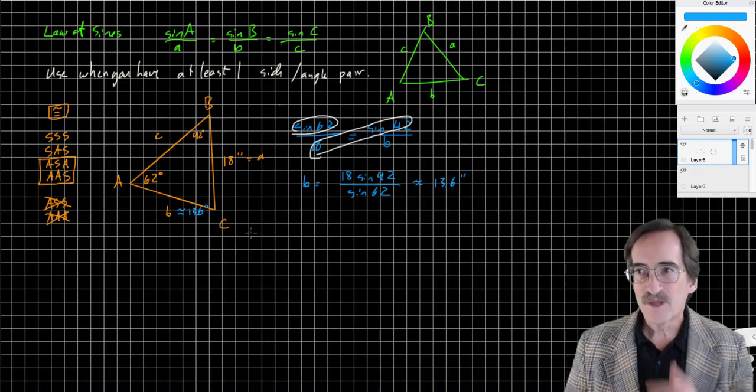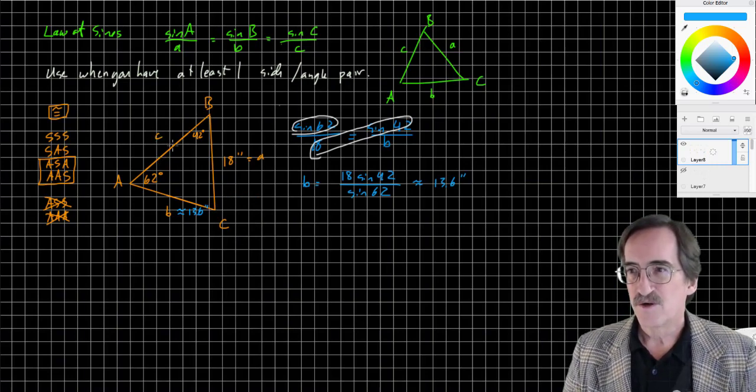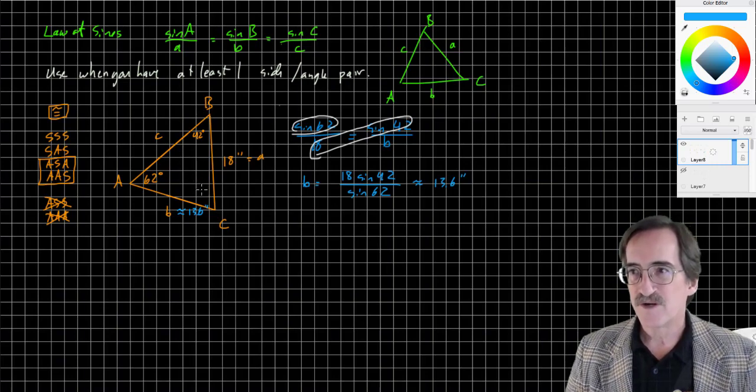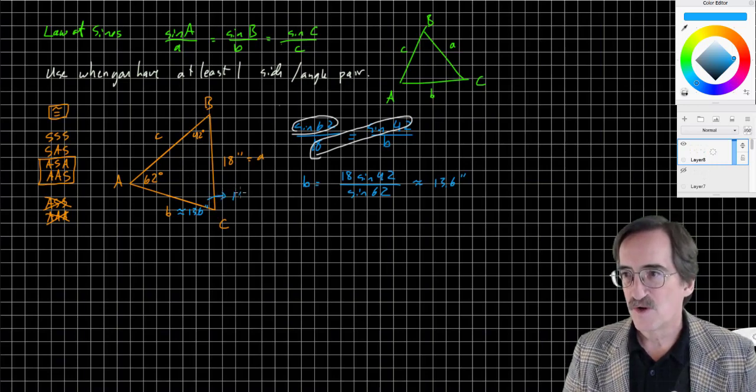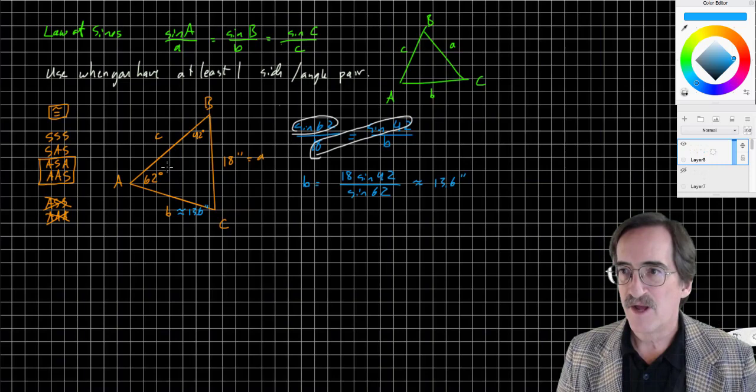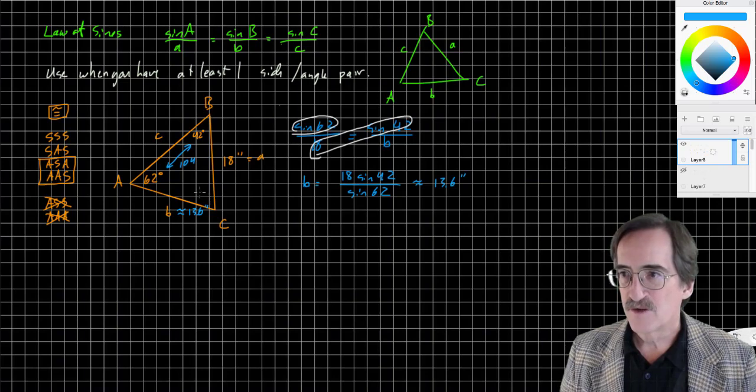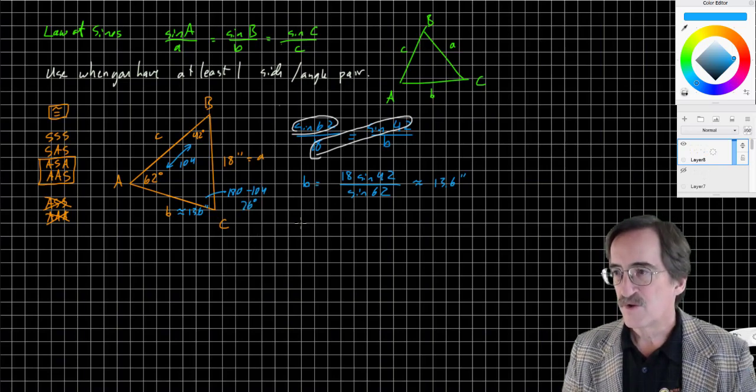If I want to find C, I can do much the same thing. If I want to find the missing angle, we're going to subtract from 180. Angle C is 180 take away 62 and 42, because the angles of a triangle add to 180. 62 and 42 is 104, so angle C is 180 minus 104, which is 76 degrees.